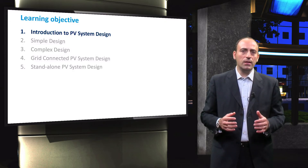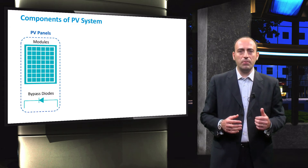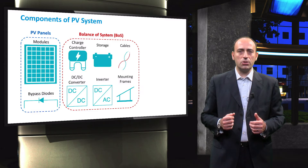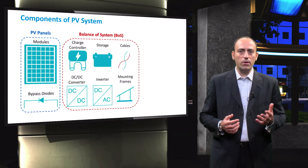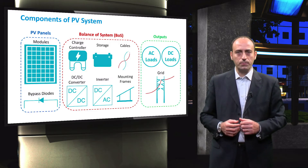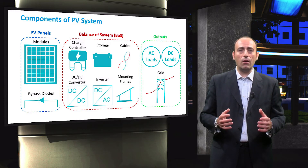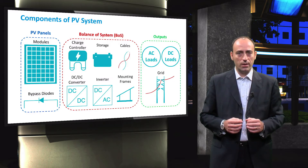As seen in the previous weeks, PV systems comprise PV panels and balance of system components such as the charge controller, inverter, battery, cables, converters, mounting frames, and the outputs. In particular, we have learned in detail how the different components in the PV system operate with respect to one another.